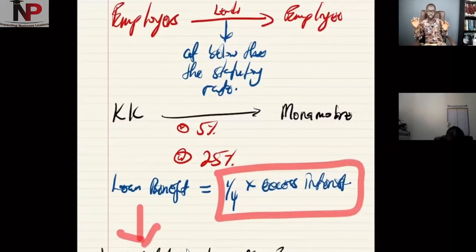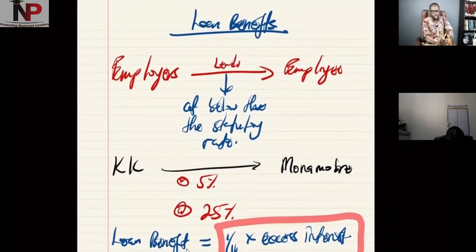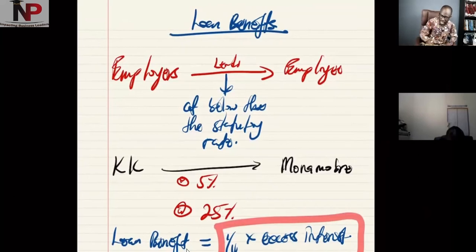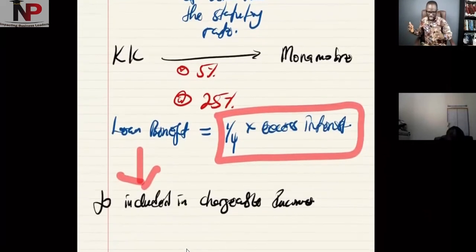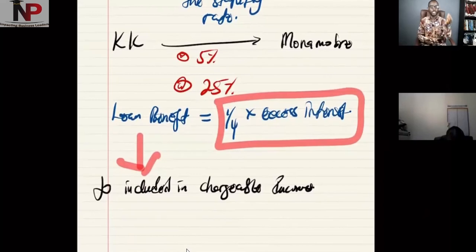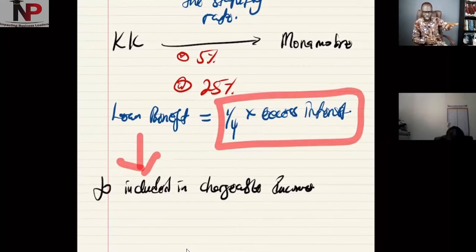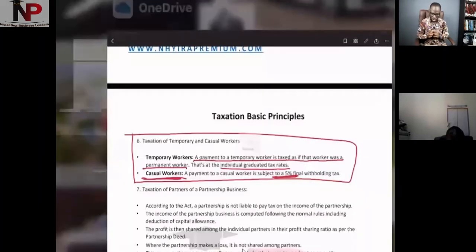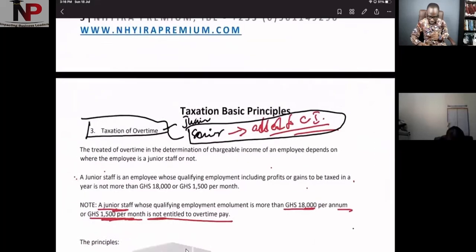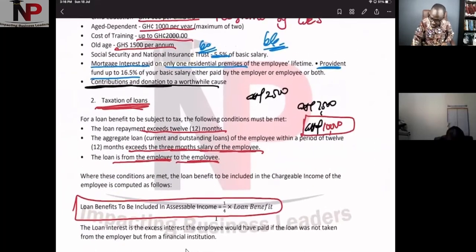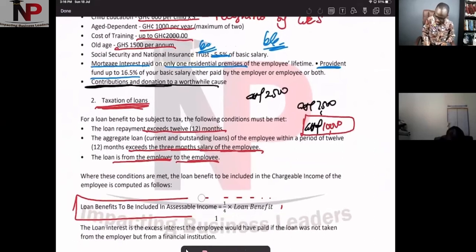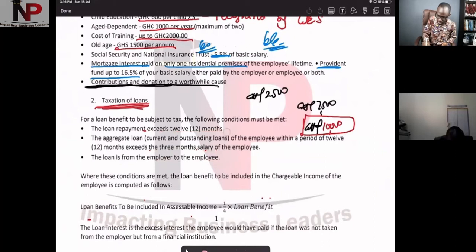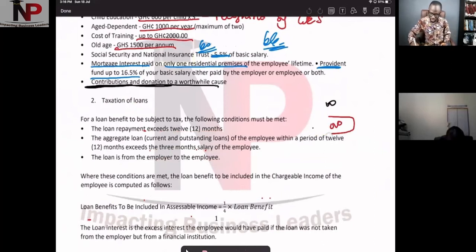So to be clear: it has to be from employer to employee, the rate has to be below the statutory rate, and what we include in chargeable income is one-fourth of the excess interest the person should have paid. But there is another condition. Let's go back to the principal documents and bring that up. Let me clean this up — I used this during the week for the advanced taxation course.